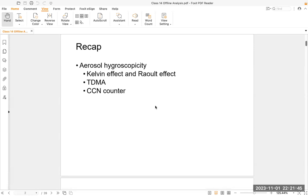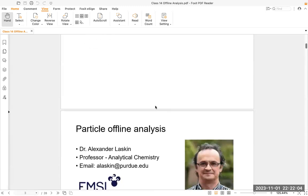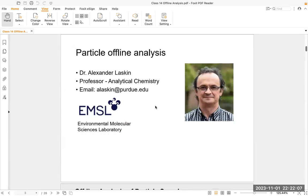We introduced the mechanisms of the instruments and how we obtain the hygroscopicity of the aerosols. These measurements are still online based — you can get the aerosol hygroscopicity even in real time. But this class, we're going to talk about the particle offline analysis, which involves sampling the aerosols during measurement and then analyzing them using offline imaging techniques, which cannot happen at the same time as aerosol sampling.